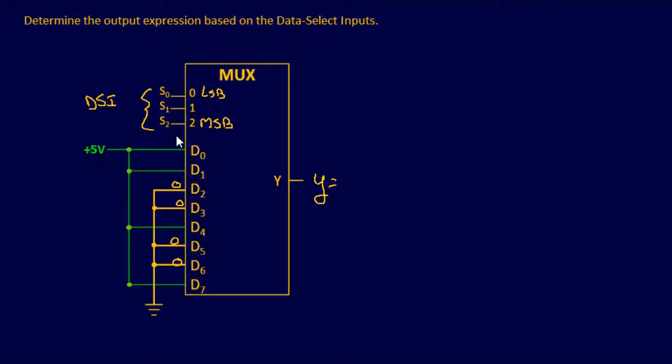And I'll tell you what, I'll make it easier. Let me change colors for the other ones. So that's going to give us a 1 input, 1 input, 1, and a 1. And we want to find out what our expression is going to be for a high output based on these data inputs. Let's jump into it.